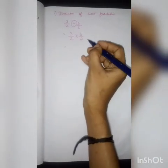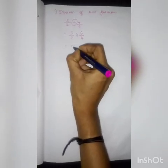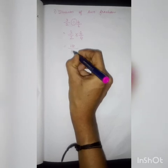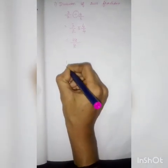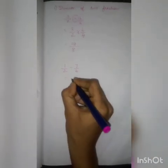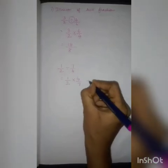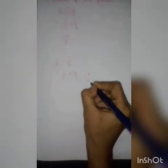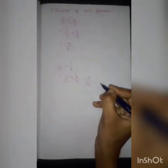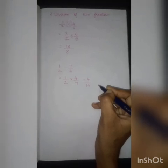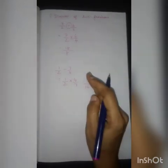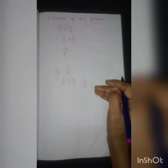Now as in multiplication: numerator into numerator — six 3s are 18; denominator into denominator — four 2s are 8. Answer is 18 by 8. Another example: 1 by 2 divided by 7 by 4. Division becomes multiplication, and the next fraction becomes reciprocal: 7 by 4 becomes 4 by 7. Numerator into numerator: 1 into 4 is 4. Denominator into denominator: 7 into 2 is 14. This is how you do division of two fractions — convert division to multiplication, take the reciprocal of the second fraction, then multiply.